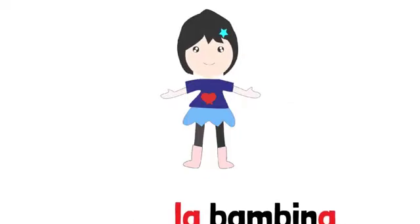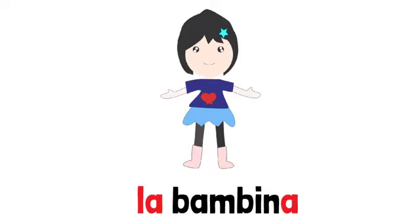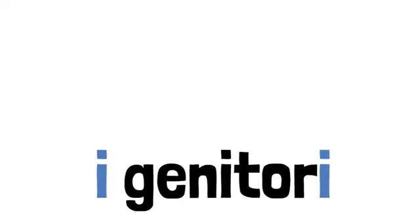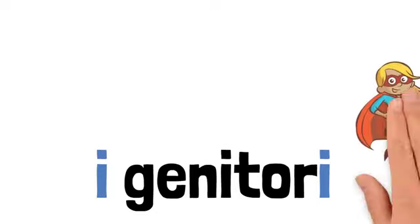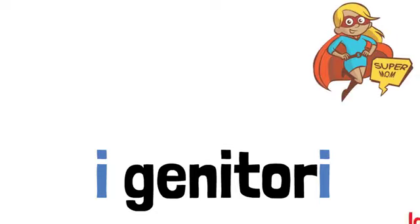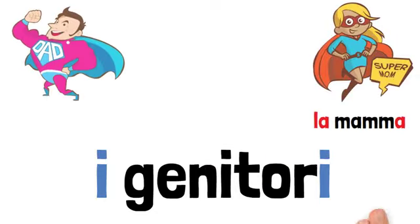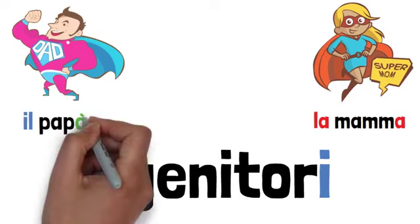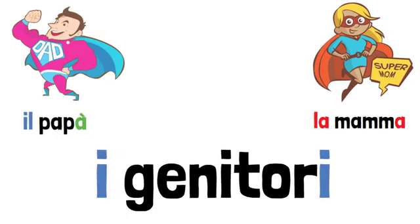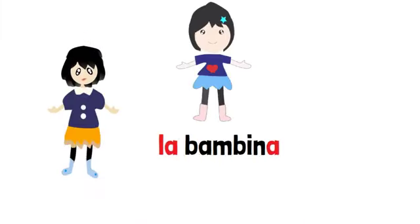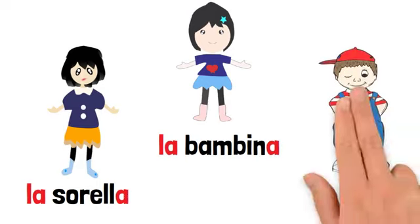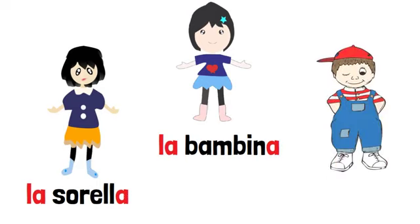Let's start with our main character, la bambina. And now let's introduce our parents, i genitori — la mamma and il papà. This is the sister, la sorella. And here is the brother, il fratello.